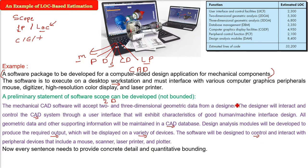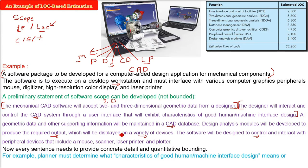Every sentence written here in the project scope needs to provide concrete detail and quantitative bounding. We have to bound it with certain quantitative analysis and then see how many functions we can find out. Every sentence has to be bounded. It has to provide proper detail. For example, what does good characteristics of good human-machine interface design mean? We have to bound it. Or what will be the size and sophistication of this CAD database? We have computer graphics display facilities, 3D geometric analysis, 2D geometric analysis. These are all the functions that will come out from here.